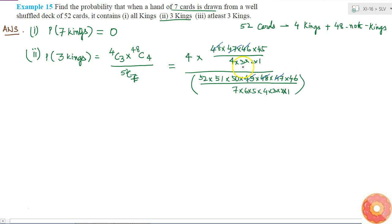And what else can I cancel? I can cancel 4, 3, 2 and 1 because they are in the denominator of the numerator and the denominator of the denominator. I can cancel 48, 47, 46 and I can also cancel 49 with 7 and I'll be left with 7 here.